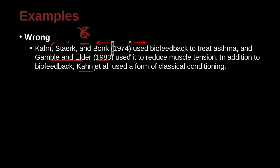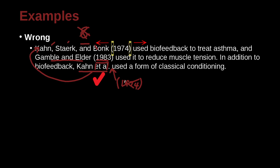Then we repeat Khan et al. — same as the citation above — with three or more authors, so we can use 'et al.' We don't have a date. Where's our date? It should be 1974. But we don't need a date here because it's a special rule: we're inside the same paragraph and the names were already outside of the parentheses, so we do not need to repeat that date.